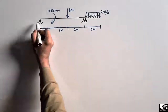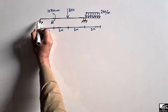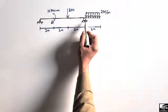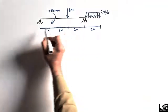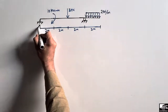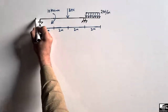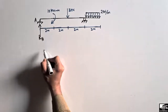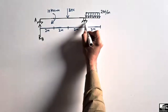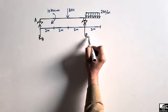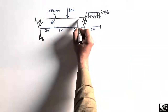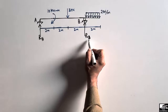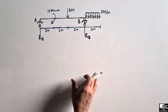This is a hinge support, so it can resist both vertical and horizontal loads. But if there is no horizontal load acting on this beam, it will only resist the vertical load. So if this is support A, it will provide the reaction RA. Similarly, this is the roller support — it can take only the vertical load. Let's suppose this is support B, so it will provide the reaction RB.